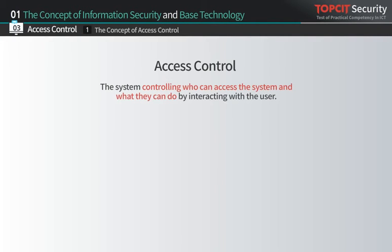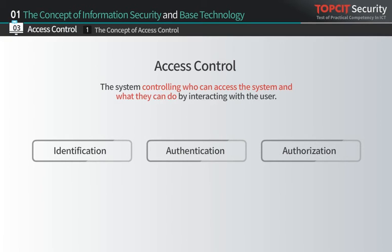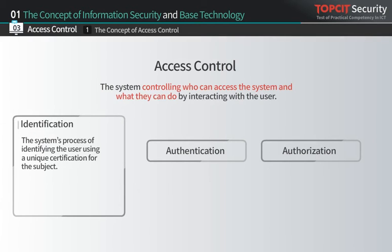Access control is the system that interacts with the user to control who can access the system and what they can do. It is divided into three parts: identification, authentication, and authorization. Identification is a process for the system to use a unique certification to identify the subject — that is, a process of identifying who the subject is. IDs, employee cards, and biometrics fall into this category.